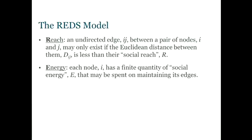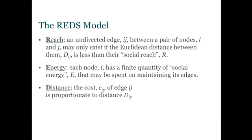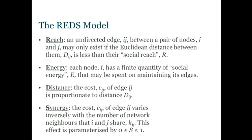Nodes have a limited amount of energy that they can spend on maintaining edges. D is for including distance between the nodes, and that's what determines or influences the cost, the energy cost of every edge. And S is probably the most important idea, which is a notion of synergy, that the cost of edges depends on shared neighbors. So this node C here, who is friends with A, and C is also friends with B. If A and B became friends with each other, that would reduce the cost of the edges C-A and C-B.